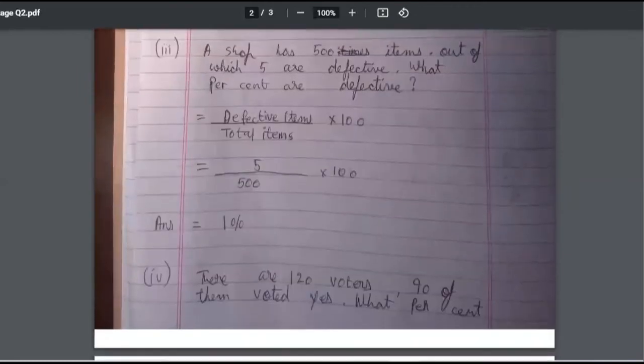No, third question. Again, your statements are missing, so I'm not going to discuss that thing. In the first two questions we have already discussed. The question is, a shop has 500 items out of which 5 are defective. What is the percentage of defective? So here what will we write? Here what will we write? So percentage of defective items.